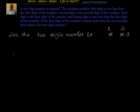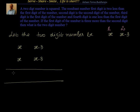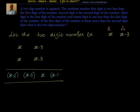Now, what is the relation between this and the resultant number? We are taking (x, x−3) and multiplying it by itself. When we multiply, we get four digits. The first digit of the resultant number is two less than the first digit of the number, that is x minus two. The second digit is the second digit of the number, x minus three. The third digit is the first digit of the number, x. And the fourth digit is one less than the first digit, x minus one.